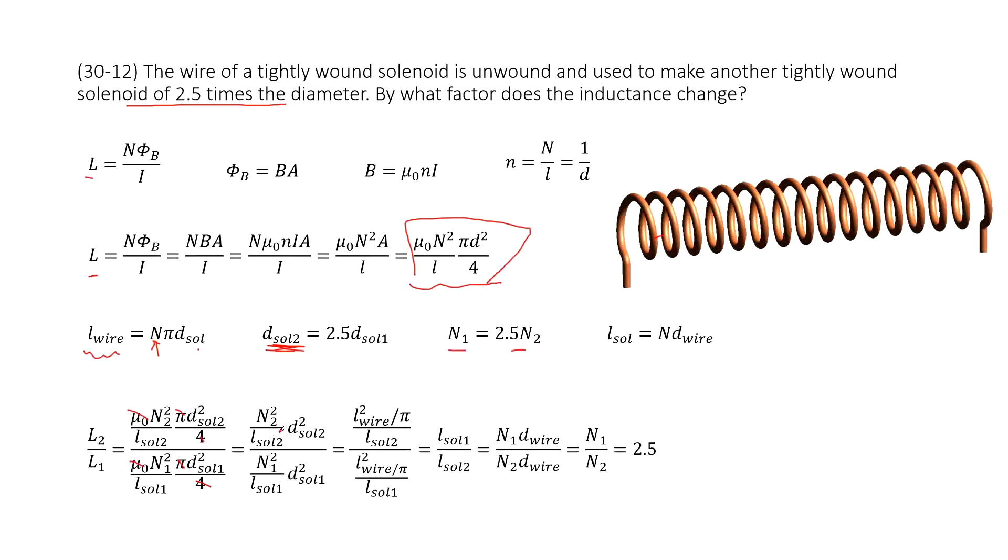Now another thing, there we have n₂ squared times d solenoid 2 squared, looks like there. We can replace it with L_wire divided by π squared.